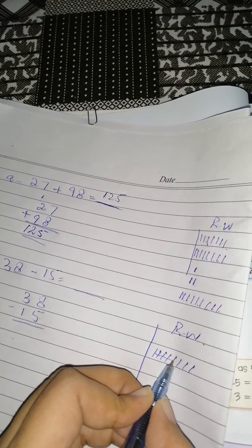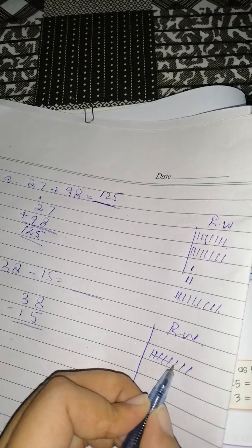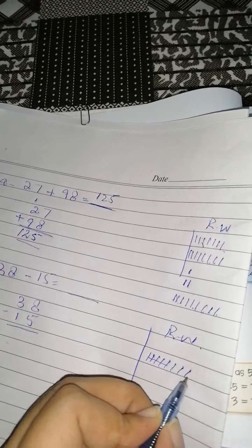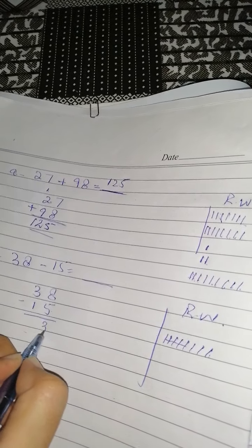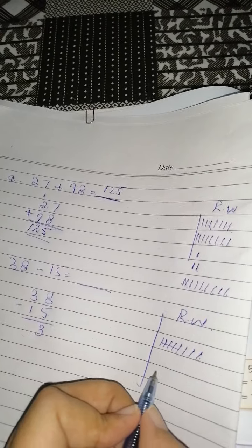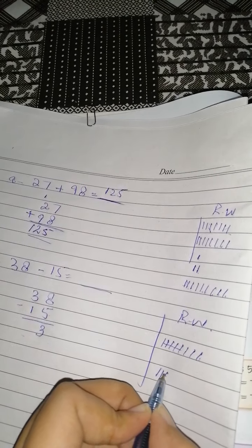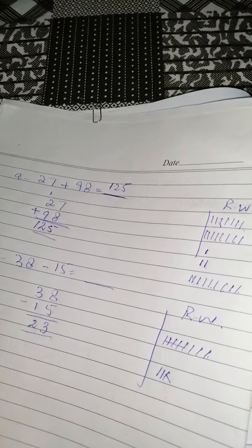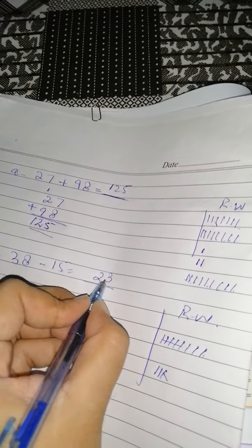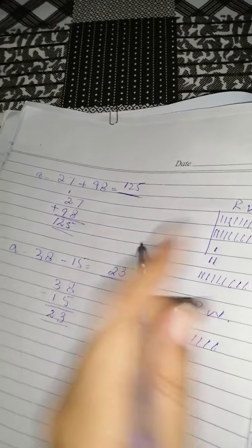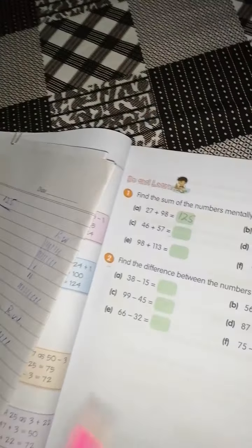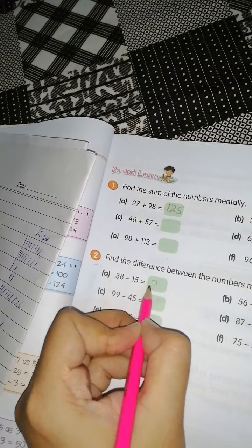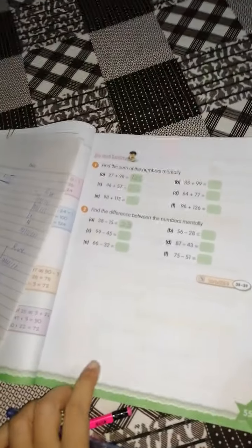8 میں سے 5 کو cancel out کرنا ہے: یعنی 1, 2, 3, 4, 5۔ یعنی آپ نے 5 cancel out کر دیا تو آپ کے پاس remaining کتنے ہیں 1, 2, 3۔ تو آپ نے یہاں لکھ دیا 3۔ 3 میں سے 1 کرنا ہے: 1, 2, 3۔ 3 میں سے 1 cancel کر دیا تو کتنے بچے 2۔ ہم نے یہاں لکھ دیا 2 اور ہمارا answer آ گیا 23۔ 23۔ تو ہم نے جہاں پر answer لکھ دیا 23۔ ٹھیک ہے۔